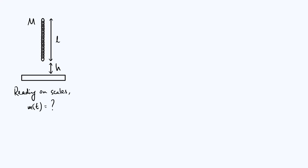The complication here is that the reading m(t) is not purely due to the mass of the chain already resting on the scales; there's going to be an extra contribution from the fact that as each link of the chain hits the scales it exerts a little impulse, thereby making the effective mass look bigger than it actually is. So what we're going to do in this video is find that effective mass reading as a function of time for all times bigger than zero, and we're going to finish by sketching a graph of m as a function of t to visualize how our reading changes over time.